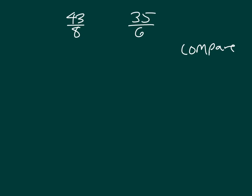Let's compare these two here. We have 43 eighths and 35 sixths. Let's go ahead and rewrite them as mixed numbers. 43 eighths is decomposed like that there. 40 eighths is equal to what whole number? 5. And we put it together with the 3 eighths.